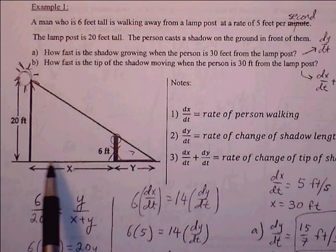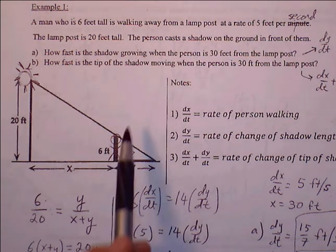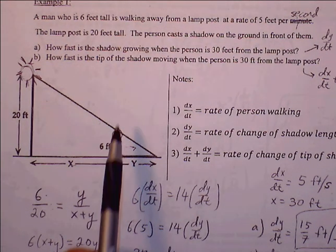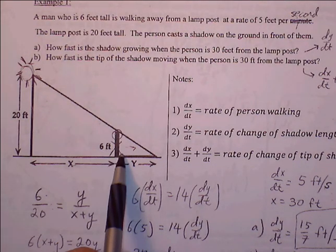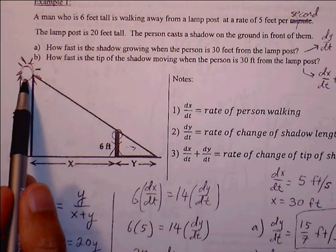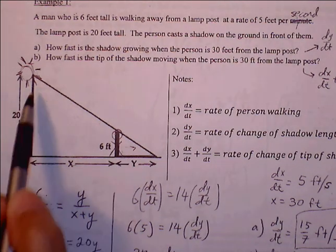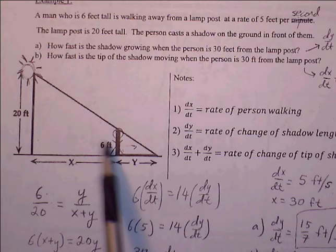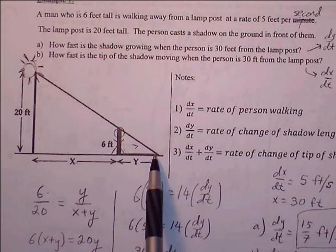Part A: how fast is the shadow growing when the person is 30 feet from the lamppost? Part B: how fast is the tip of the shadow moving when the person is 30 feet from the lamppost? Here's a diagram. We have the 6-foot person here and we have the 20-foot lamppost here. The shadow cast from the lamppost is given by this portion of the small triangle.